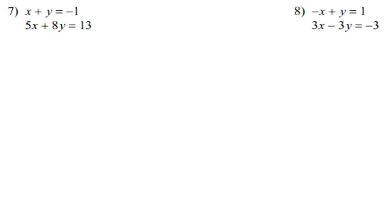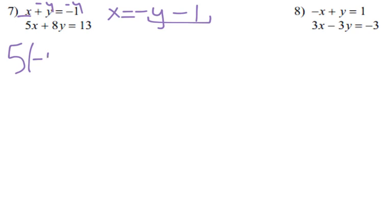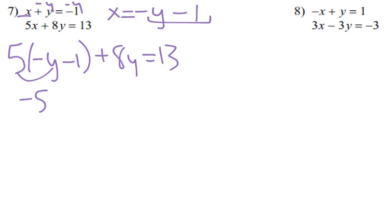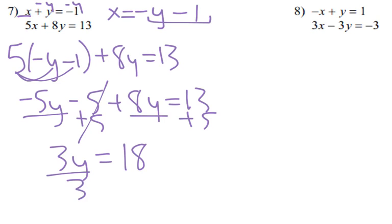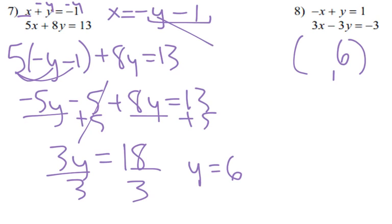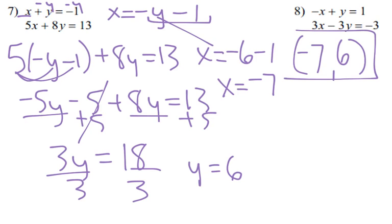Number 7: I solve for x by subtracting y, so x equals negative y minus 1. I plug negative y minus 1 in for x. Then: negative 5y minus 5 plus 8y equals 13. Combining: 3y minus 5 equals 13. Add 5: 3y equals 18, divide by 3, y equals 6. Plugging back in: x equals negative 6 minus 1, so x equals negative 7. One answer: negative 7, 6.